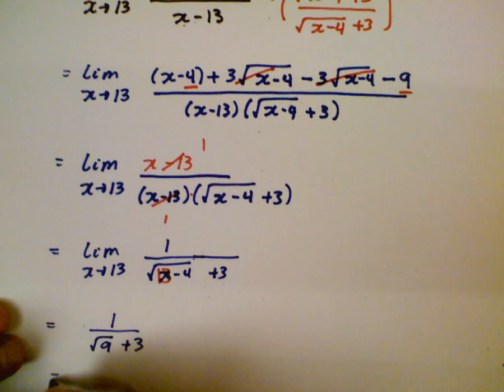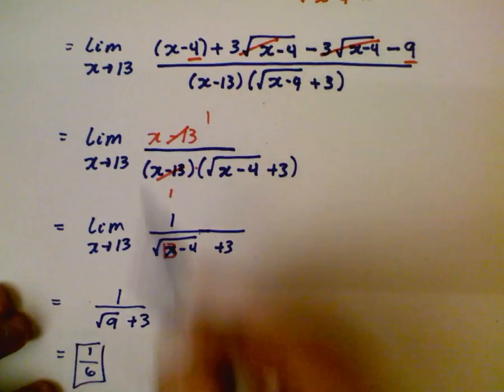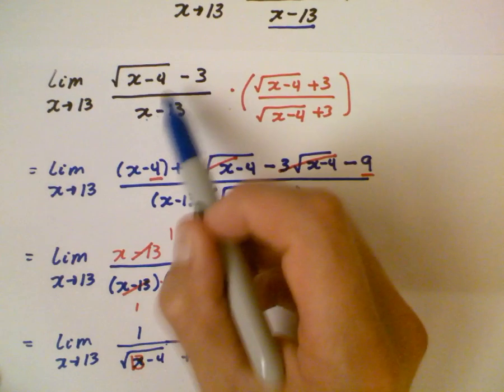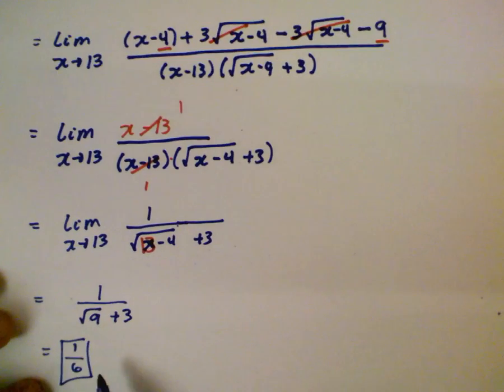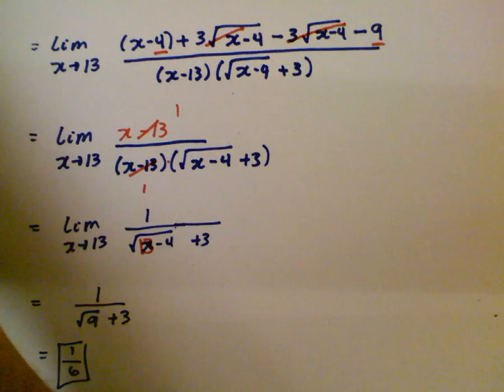And now you have 1 over root 9 plus 3. So that's just 1/6. So the limit as x approaches 13 of this function of this expression is going to be 1/6. And that's how to rationalize the numerator and find that limit algebraically.